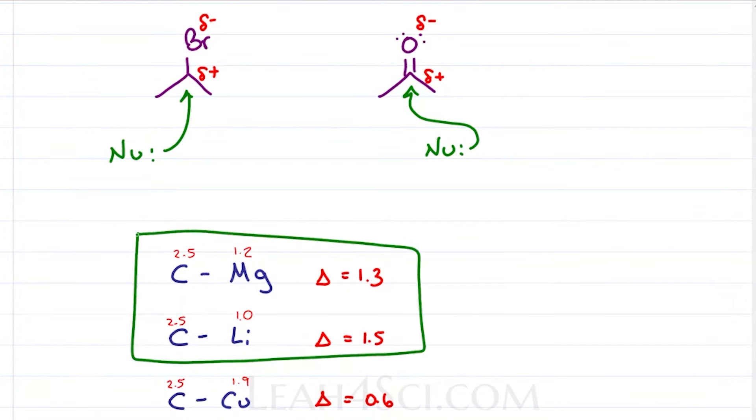Notice that the difference is greatest between magnesium and lithium, making these two more reactive, which will be important for later reactions, and copper at 0.6 is a lot less reactive.